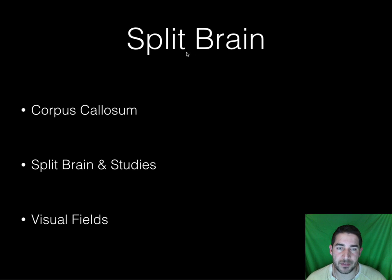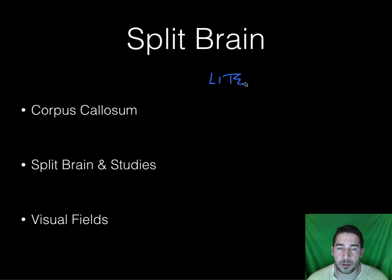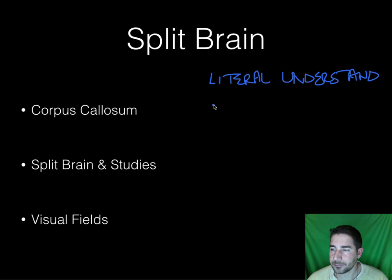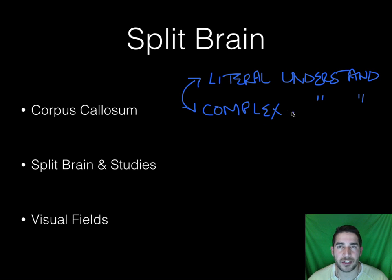Talking about brain dominance and the different hemispheres — a couple of things to keep in mind. You might have heard people say, 'are you left brain or right brain?' We're really both brains, and everything works in conjunction. Your left brain might be more for literal understanding, while your right brain is more for complex understanding. These two are working in conjunction all the time when you're thinking about things.